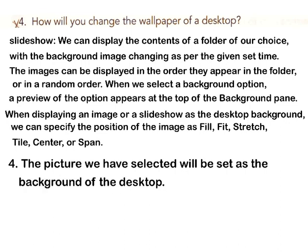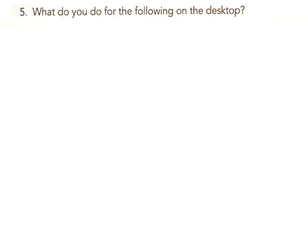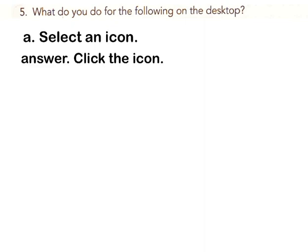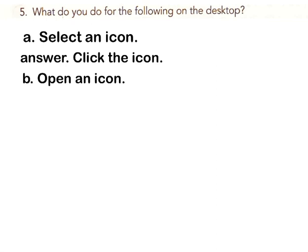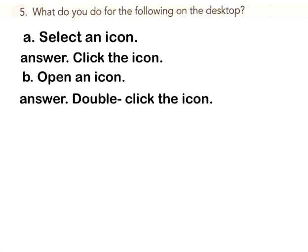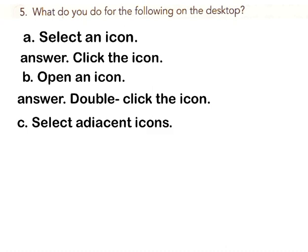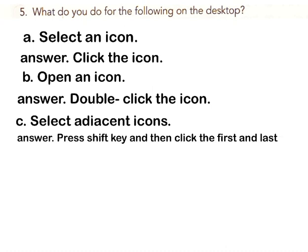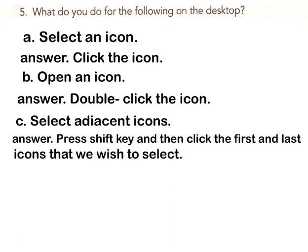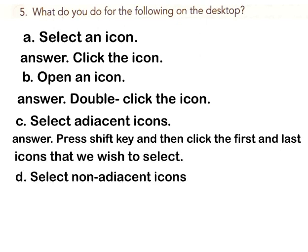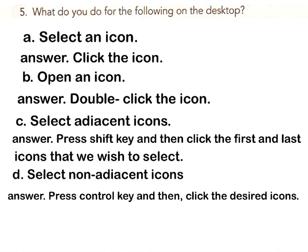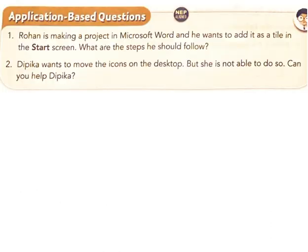Step 4: The picture selected will be set as the background of the desktop. When displaying an image or slide show, you can specify the position as Fill, Fit, Stretch, Tile, Center, or Span. Question 5: What do you do for the following on the desktop? A) Select an icon — click the icon. B) Open an icon — double-click the icon. C) Select adjacent icons — press Shift key and click the first and last icons. D) Select non-adjacent icons — press Ctrl key and click the desired icons.